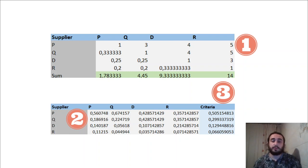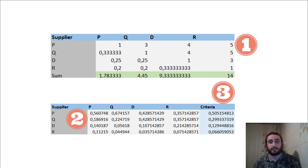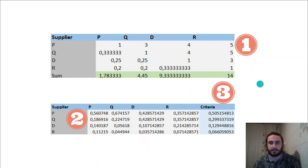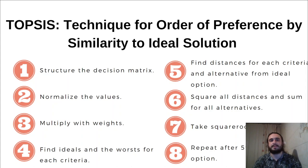After we have calculated those weights, we should look for our consistency index. With the inconsistency table, if the inconsistency index is greater than 0.1 then we cannot use those numbers — we should change something in the matrix. Our choices do not have a rational meaning; we are irrational and should change something. Let's assume that our inconsistency index is good enough.